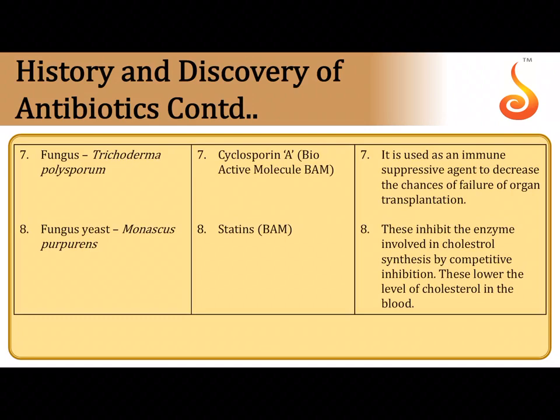The fungus Trichoderma polysporum is a source of a bioactive molecule called cyclosporin A. Cyclosporin A is used as an immunosuppressant drug, especially for patients who have undergone transplantation surgery, so their immune system does not reject the organ received from the donor.